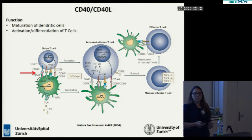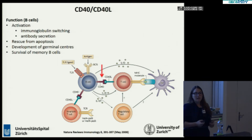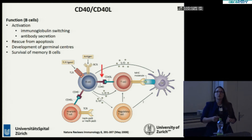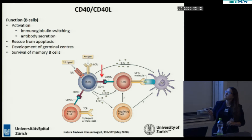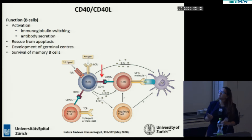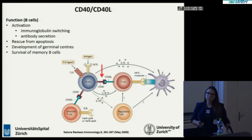As summarized here, and as we said before, also at the level of the T cell interaction with a B cell, the activation of this pathway is fundamental, and for the B cells the maturation and the immunoglobulin switching, as well as the development of germinal centers.